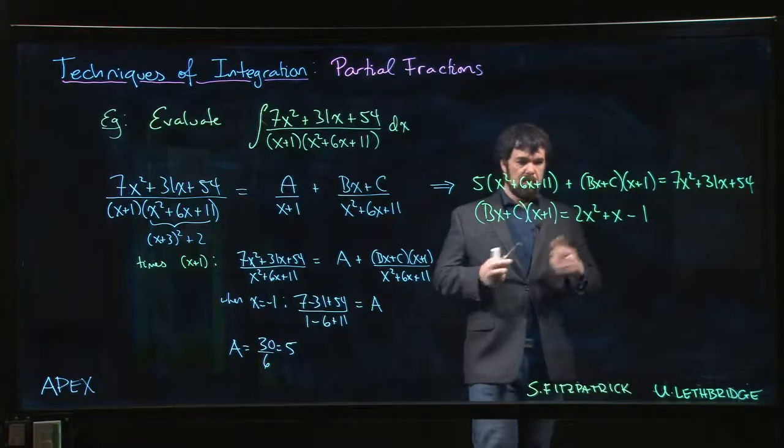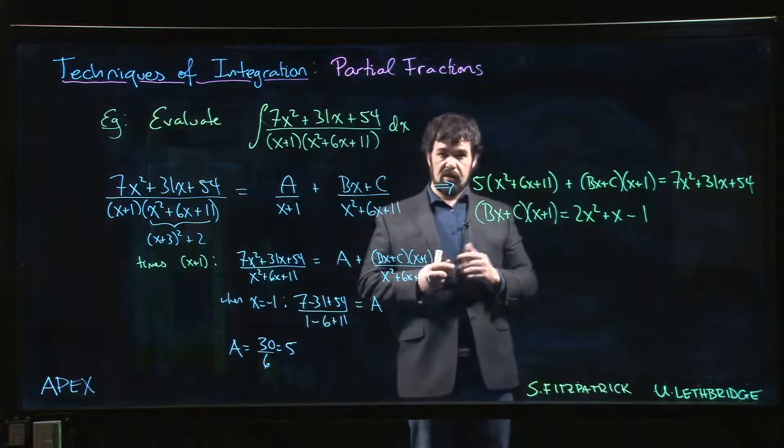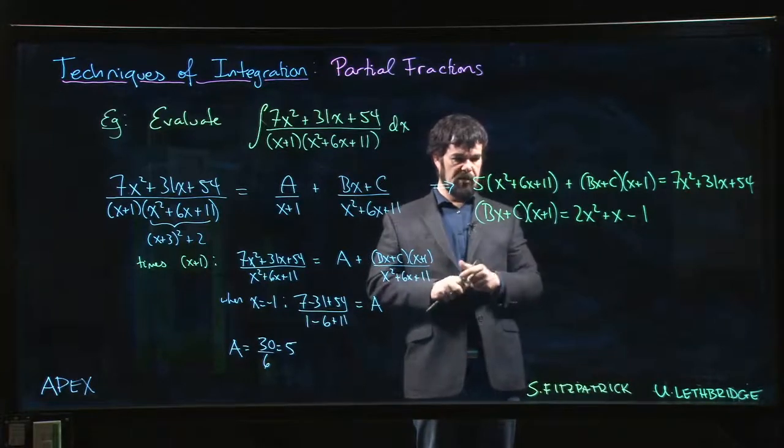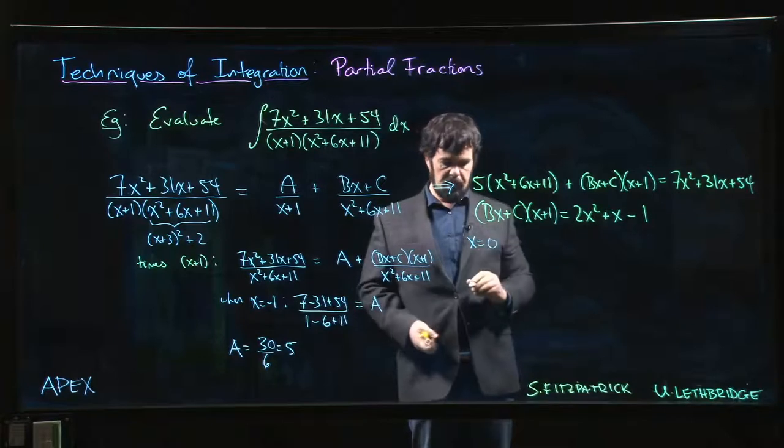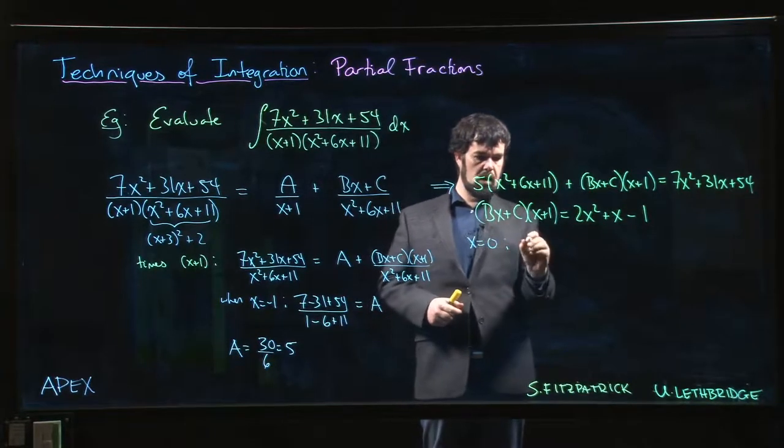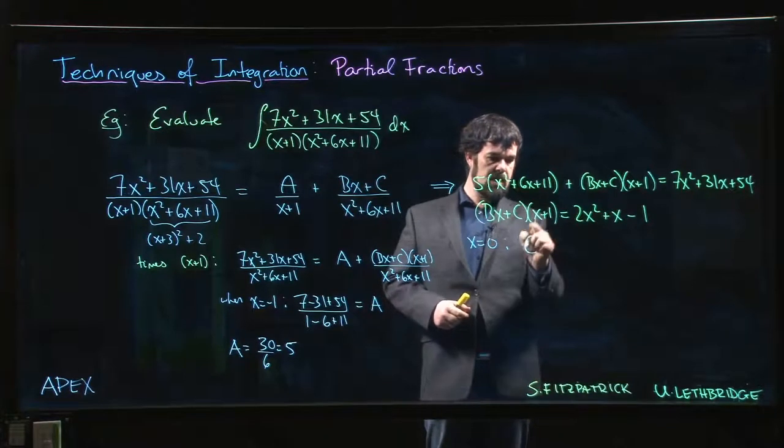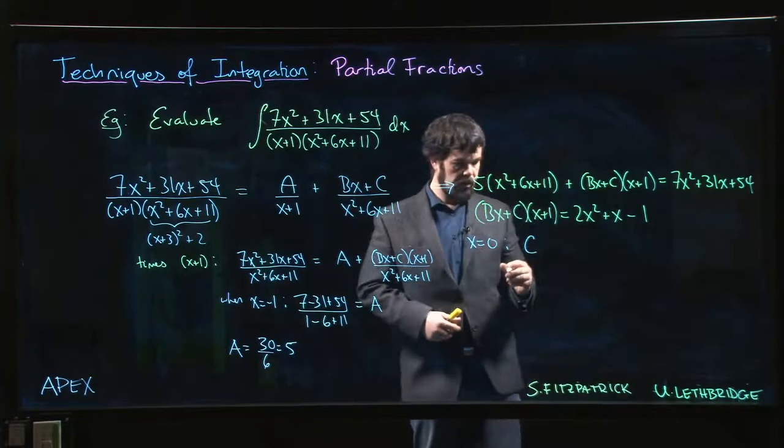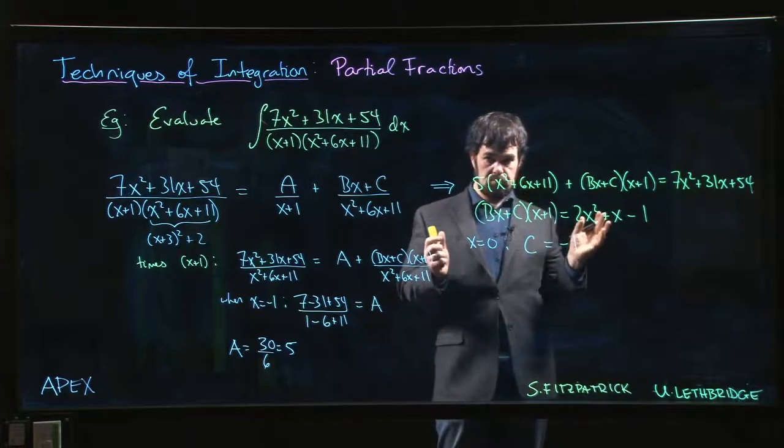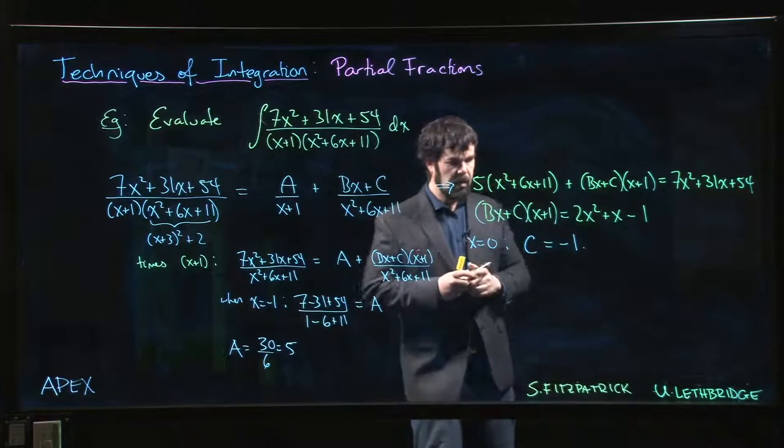So now what we do is we plug in different values of x to try to solve. And one that immediately jumps out at us is we should try putting x equals 0 because we put x equals 0. Well, then Bx is gone. I get C times 1. So I just get C is equal to minus 1. That wasn't so bad.